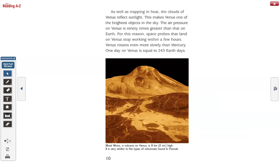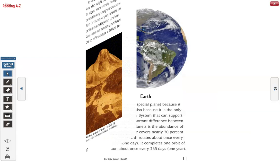Moat Mons, a volcano on Venus, is 8 kilometers high. It is very similar to the types of volcanoes found in Hawaii. Earth.